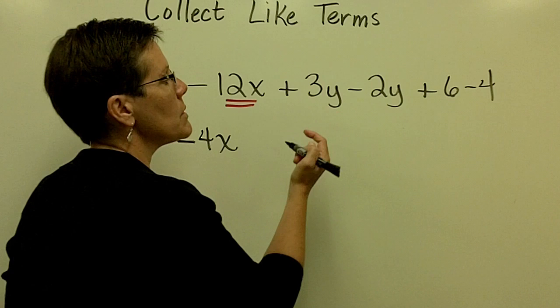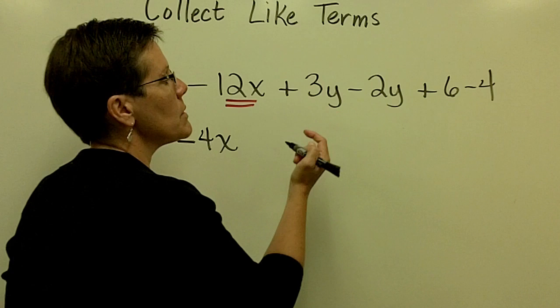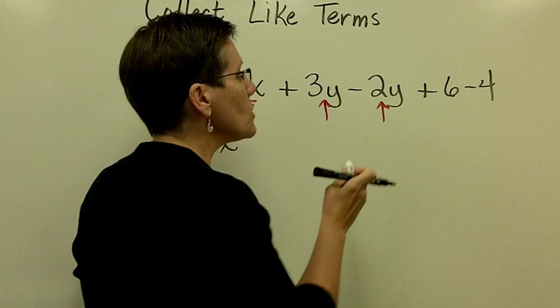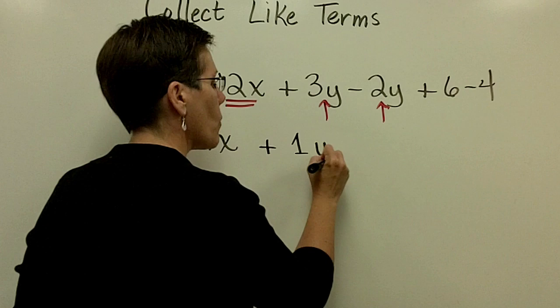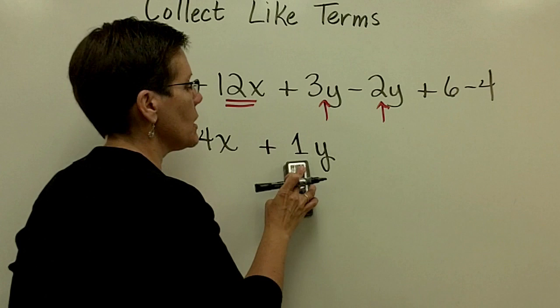Let's keep moving on. I'm working left to right and my like terms happen to be side by side. So now I have a 3y and I'd like to take away a 2y. When I take their coefficients and subtract them, 3 minus 2 is a positive 1. I can write the 1 with that y or I don't have to. Typically we do not. So typically we write that as just plus y.